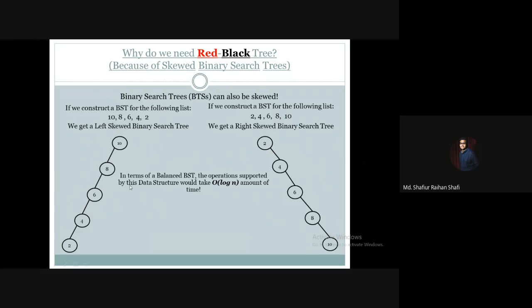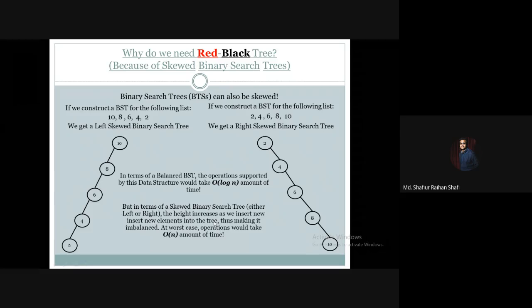But if a binary search tree becomes skewed — either left or right — the height increases as we insert new elements into the tree. As we insert n elements, the tree's height keeps increasing, making it imbalanced. In a skewed or imbalanced binary search tree, those same operations in the worst case scenario take O(n) amount of time.